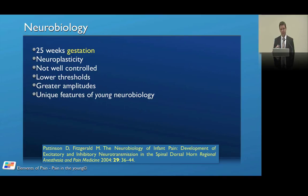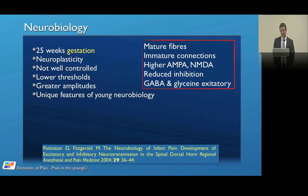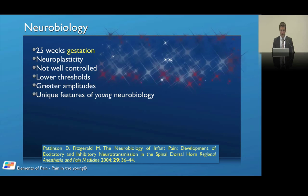There are lower thresholds in the young nervous system and greater amplitudes of pain — these are the unique features of the young neurobiology of pain and nociception. They have mature fibers with immature connections — they work, but they're not controlled, and that means they can get out of hand. They have high levels of NMDA, so sensitization and central neuroplastic changes occur. There is reduced inhibition, and even GABA and glycine in early days can be excitatory before they become inhibitory.